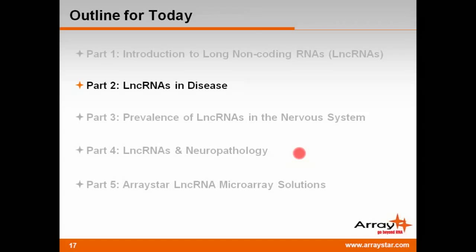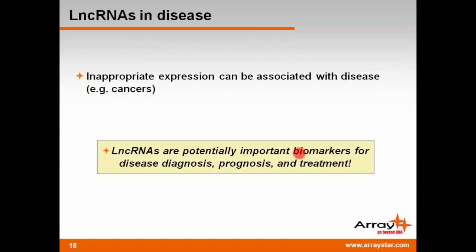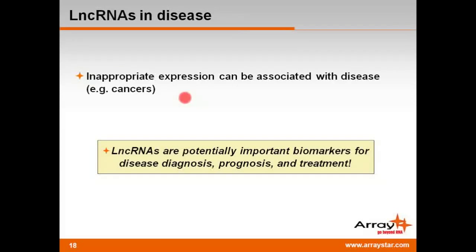So far I've introduced you to what LNCRNAs are, and how they're structured and regulated. Now let's move on to part two, LNCRNAs and disease. LNCRNAs play critical roles in the biology and development of mammals, so their inappropriate expression can be expected to be associated with disease, such as cancers. This can be either by being expressed in a tissue in which it's normally turned off, or by a change in levels within a tissue, or various other mechanisms. If a disease state is associated with the misexpression of an LNCRNA, that LNCRNA could potentially serve as either a biomarker or treatment target.